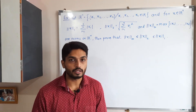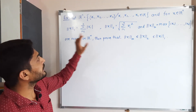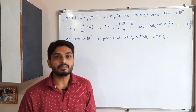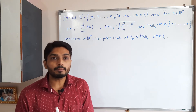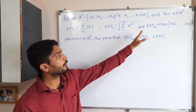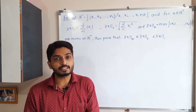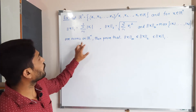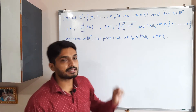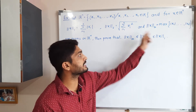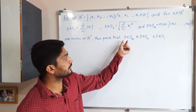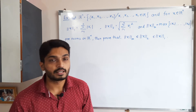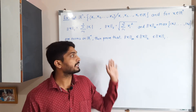Let us solve this example on norms. Three different norms are given on ℝⁿ. In our previous videos we have already proved that norm 1, norm 2, and norm infinity are norms — that is, they satisfy all the conditions of a norm on ℝⁿ. Our task in this example is to prove this inequality: ‖x‖∞ ≤ ‖x‖₂ ≤ ‖x‖₁.